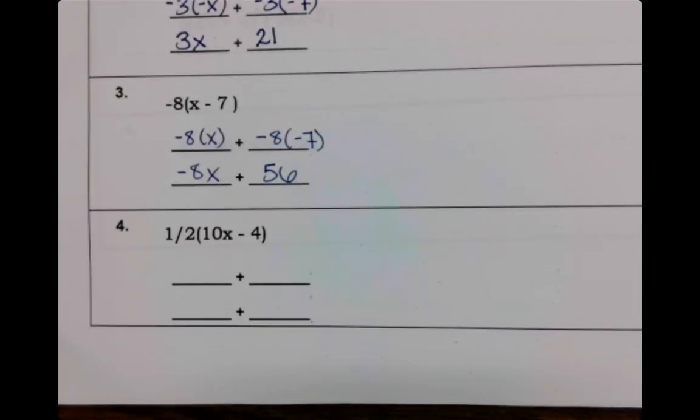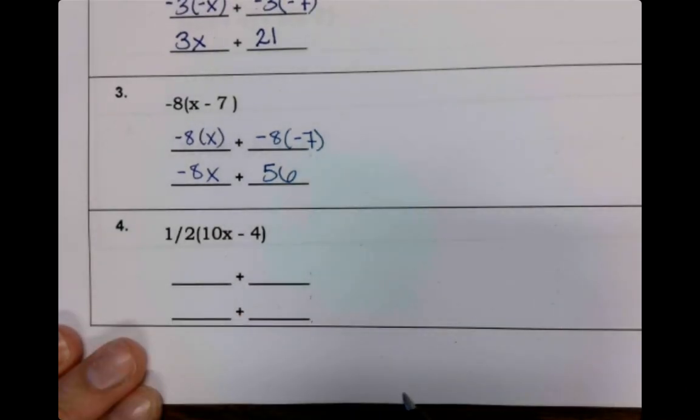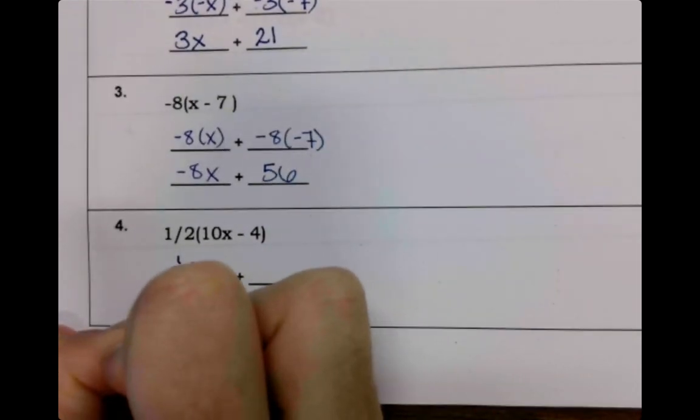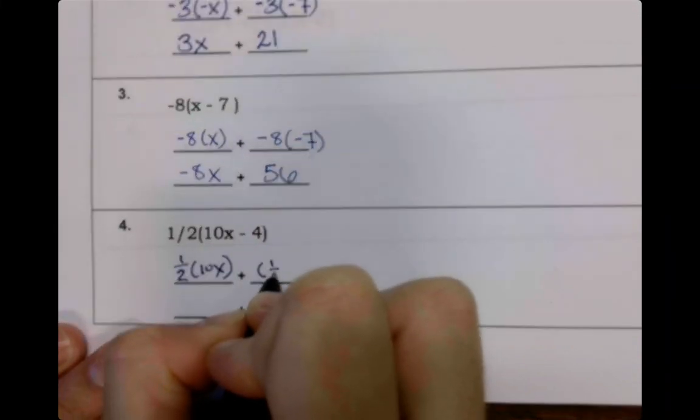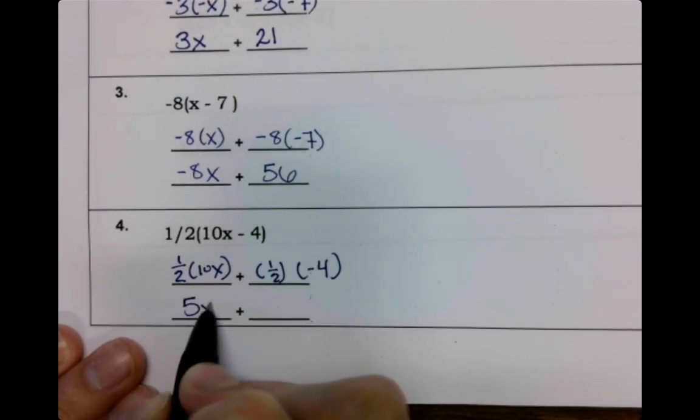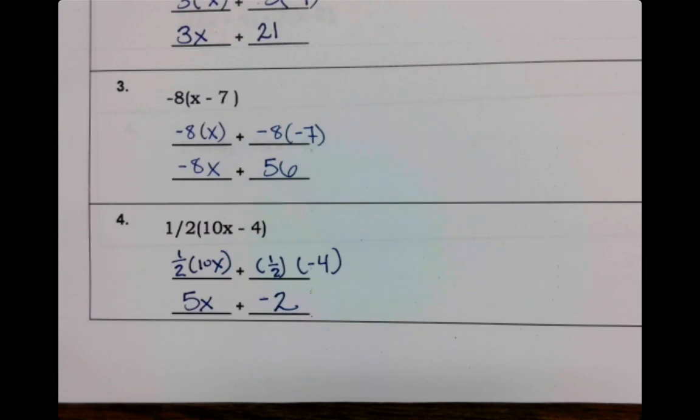Now for 4, some of you are going to be like, oh my gosh, a fraction is above. What am I going to do? I can't remember. You have a calculator that gives you fractions. Like it is not that deep. So try that one as well. Pause the video and then come on back. Welcome back. We have 1 half times 10x, we have 1 half times negative 4. Half of 10 is 5, half of 4 is 2. That is what you should have gotten.